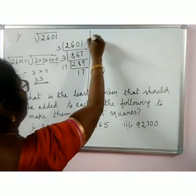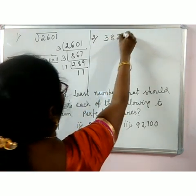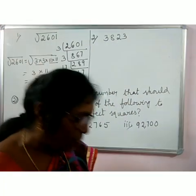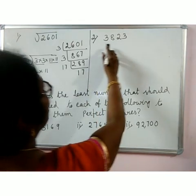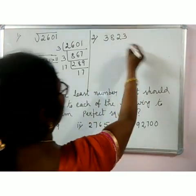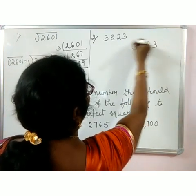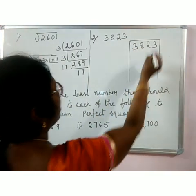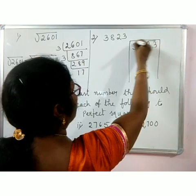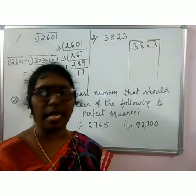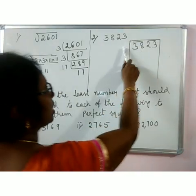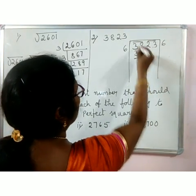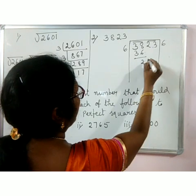For question two, let me give you one more example: 3823. What least number is to be added to 3823 to make it a perfect square? For that, find the square root by the division method — you have already learnt that. From the right side, take pairs of digits. There are 4 digits, so pair them as 38 and 23. For 38, try 6: 6 × 6 = 36.